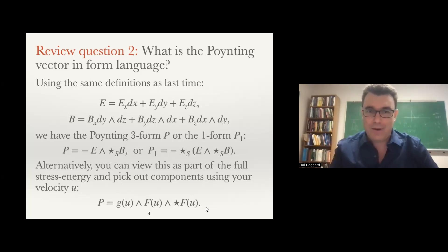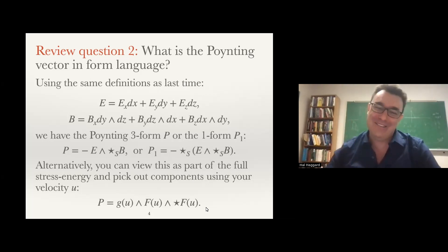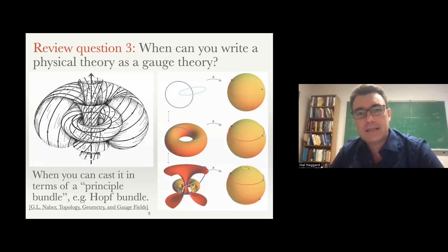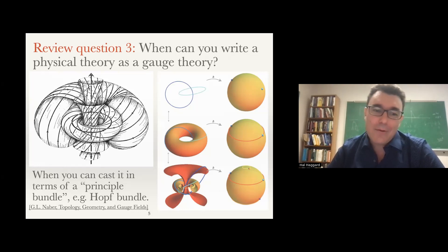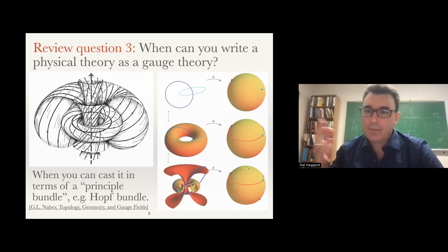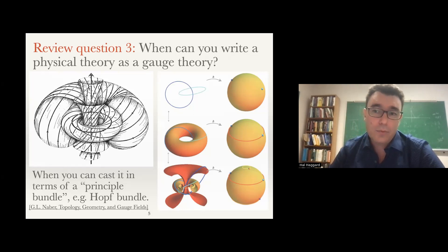It was a nice question. Another question that was asked: when can you write a physical theory as a gauge theory? My answer was that that's hard to know up front. For many years, we didn't have a nice gauge-theoretic formulation of GR. But if you understand the global structure of your theory, you actually can tell whether it's going to be a gauge theory or not. It turns out gauge theories are mathematically always examples of what are called principal bundles.